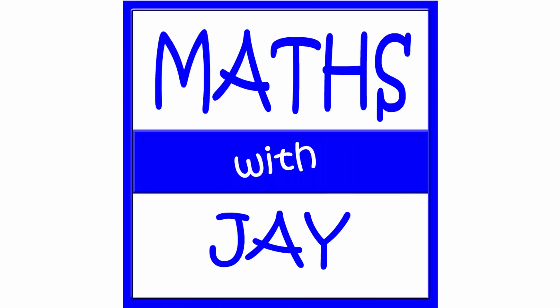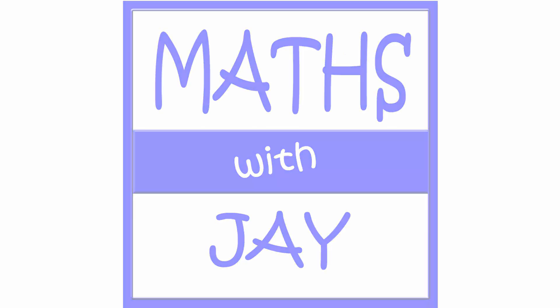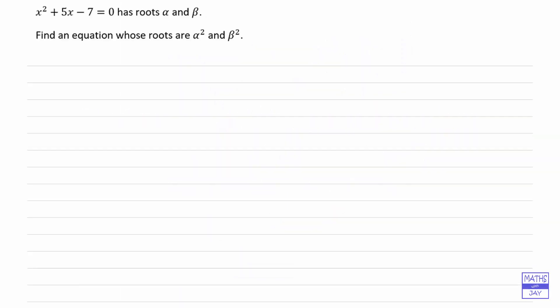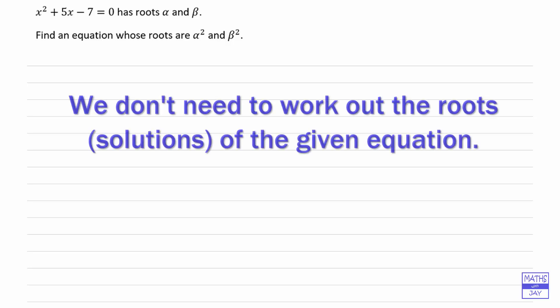Hello, welcome to Maths with Jay. Now when you're told that an equation has got roots alpha and beta and you want to find an equation whose roots are alpha squared and beta squared, the implication is that you do not find what the actual roots are.